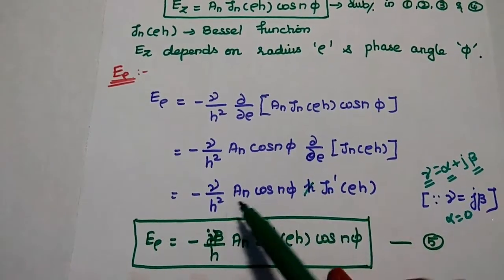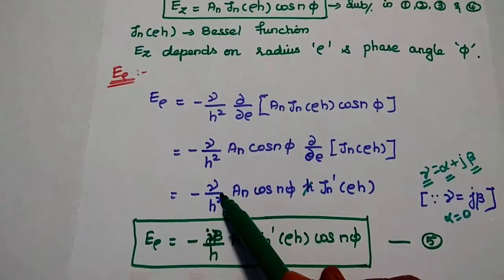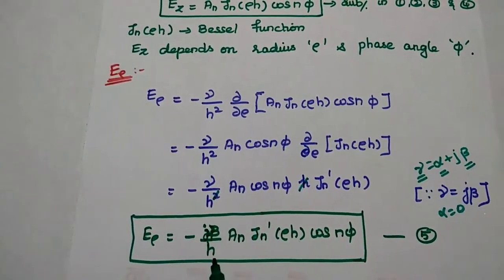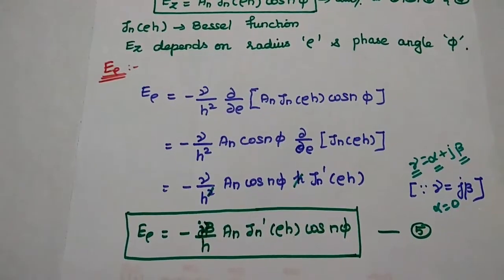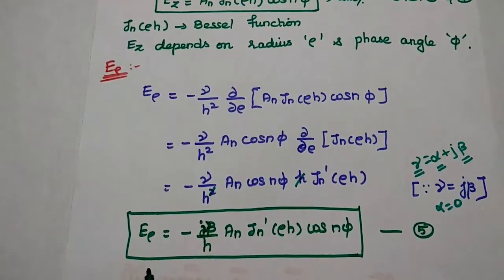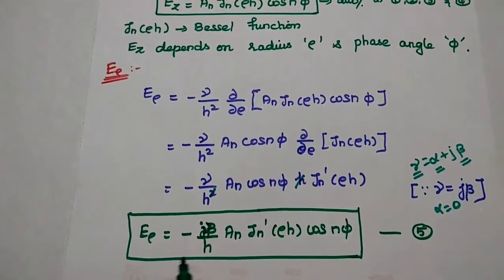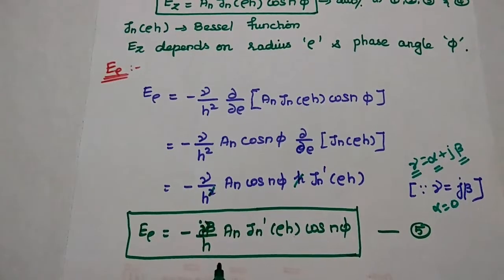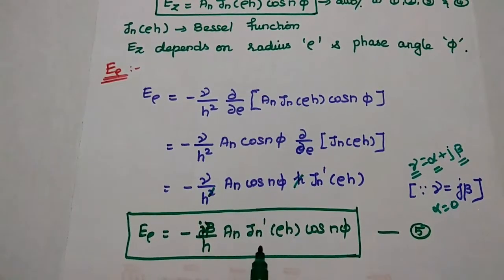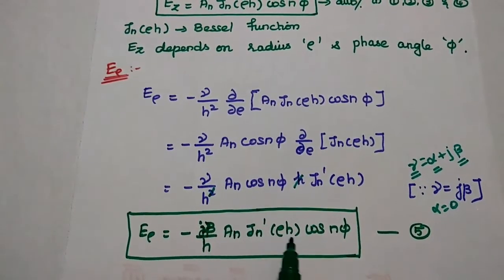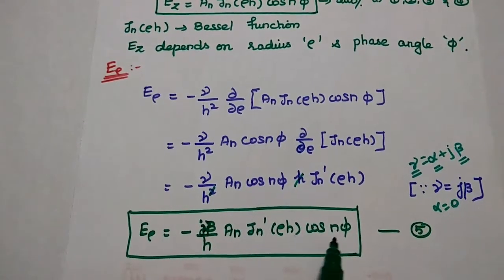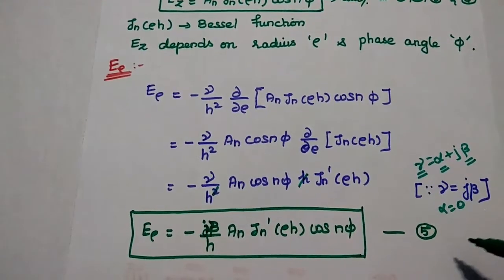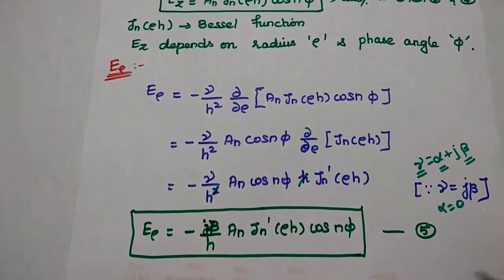Here we can divide the H and H square values. Then we get the value as E rho is equal to minus J beta by H, AN JN dash of rho H cos N phi. Consider this as the fifth equation.